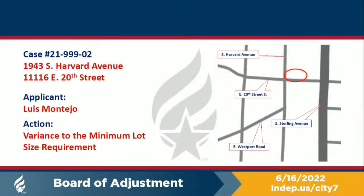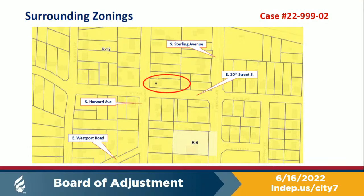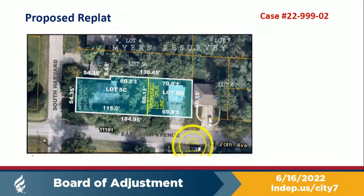The applicant seeks to divide this property into two lots, each containing its own dwelling unit. The location is just north of 23rd Street, at the northeast corner of Sterling and 20th. All the surrounding properties are zoned R12. On the rear of the property, they wish to make that lot 5D, which contains a garage with a dwelling unit above it. The western property will contain a house, designated lot 5C.